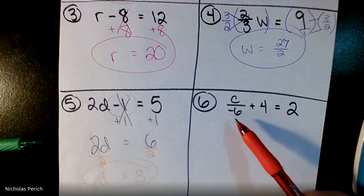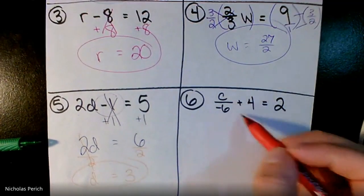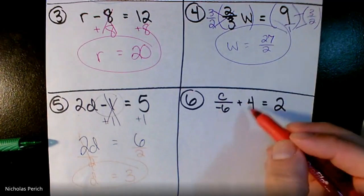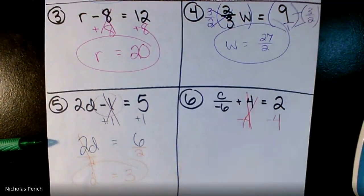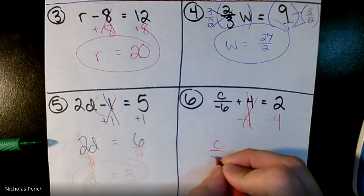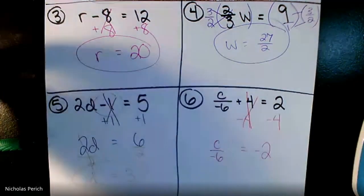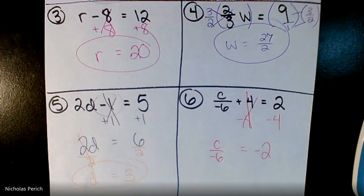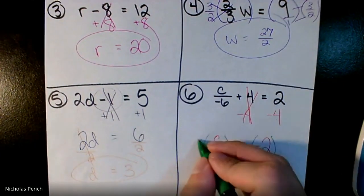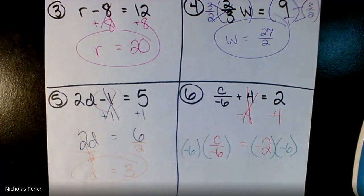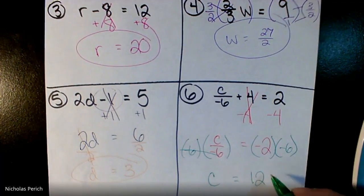c over negative six plus four: I have over negative six in the way and plus four floating around. Always get rid of the floating term first — subtract four from both sides. c over negative six equals two minus four, which is negative two. Now multiply both sides by negative six. c equals negative two times negative six, which is positive 12. Is c all by itself? Yes.